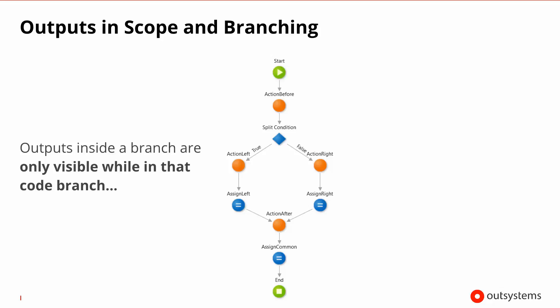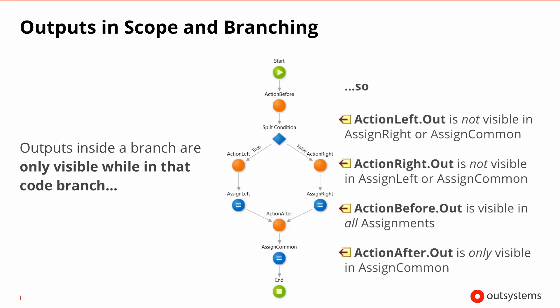If you assume that every one of these actions has one output parameter called OUT, note that the outputs inside a particular branch are only visible while you are in that code branch. As soon as you rejoin a common branch, these will no longer be visible. So in this particular case, the output of action left is not visible in assign right or assign common, and the output of action right is not visible in assign left or assign common. Action before, since the compiler knows it has been executed at all points, will be visible on all the assign statements.